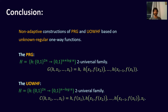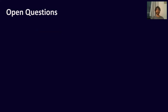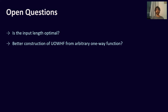To conclude, in this work we introduced non-adaptive constructions of both PRGs and universal one-way hash functions from unknown regular one-way functions. The constructions are simple and tight with respect to the number of calls but use long seed or key of length n-squared. Open questions include: can we achieve linear seed or key with a linear number of non-adaptive calls? Can we find better constructions of universal one-way hash functions from arbitrary one-way functions, perhaps without adaptive calls? And can we find better lower bounds for both PRGs and universal one-way hash function constructions? Thanks!